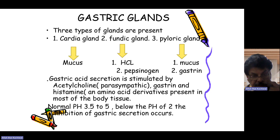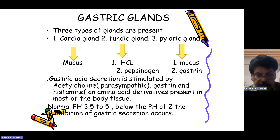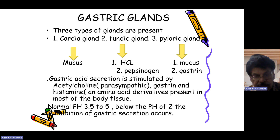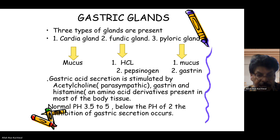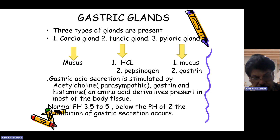The gastric glands play a very important role in digestion. There are three types: the cardiac gland, the fundic gland, and the pyloric gland. The cardiac gland produces mucous, the fundic gland produces hydrochloric acid and pepsinogen, and the pyloric gland produces mucous and gastrin. Gastric acid secretion is stimulated by acetylcholine from the parasympathetic nervous system, gastrin, histamine, and amino acids present in most body tissues. At a normal pH of 3.5 to 5, or below pH 2, inhibition of gastric secretions occurs.